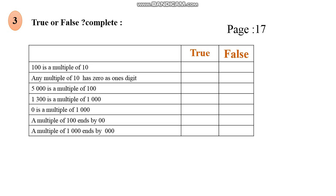Let's do number 3, true or false, complete. Let's read the first sentence: 1000 is a multiple of 10. We know that numbers that are multiples of 10 should end with 0. Does 1000 end with 0? Yes, so true. Any multiple of 10 has 0 as the ones digit. It's true.